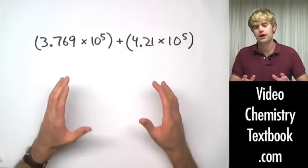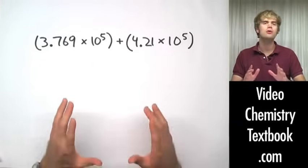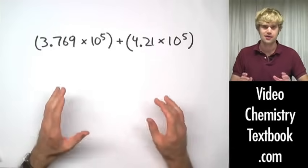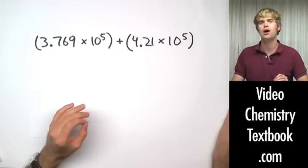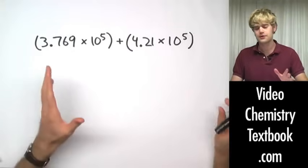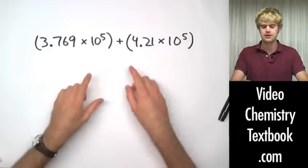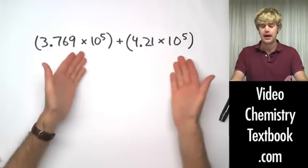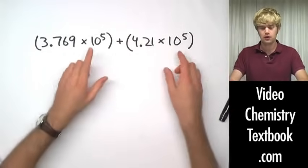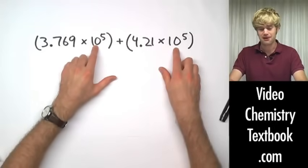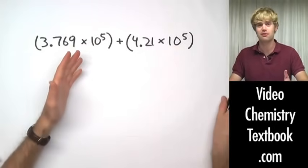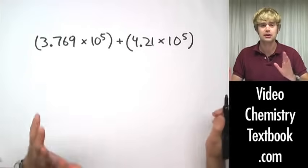When we do addition and subtraction problems with scientific notation, we hope so hard that the powers are the same because it makes the problem much easier. But if they're not the same, it isn't the end of the world. I'll show you how to solve those problems too. Let's look at this. It's an addition problem. In this case, the first thing I always want to look at is the powers. And since they're the same, 10 to the 5th in both cases, I'm set.